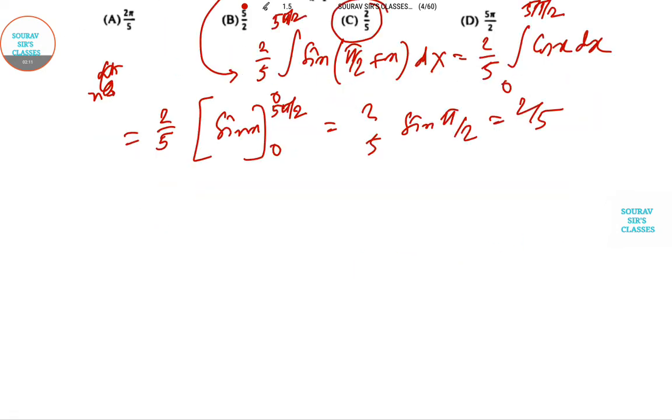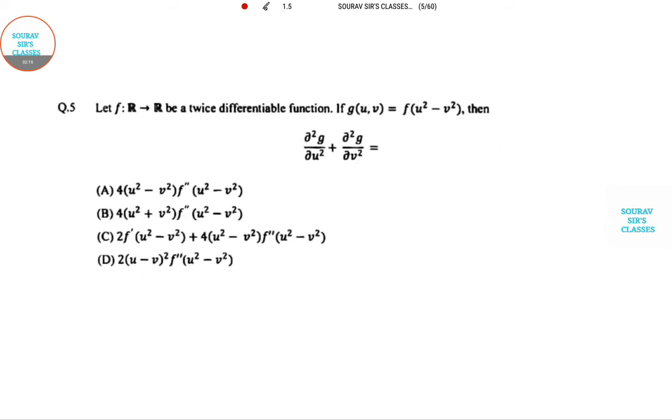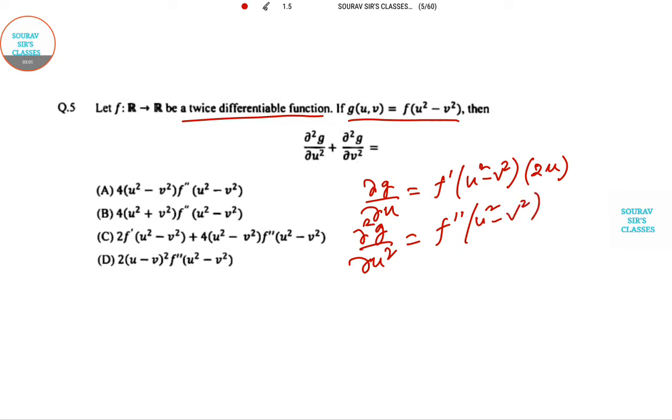Now we go to the next question. This one is a useful one. Let f: R to R be a twice differentiable function. If g(u,v) = f(u² - v²), then we have to find del² g del u² and del² g del v². We can see that g of u is a function of a function. So let me first do the partial derivative. This part is f dash (u² - v²) times 2u. And the second order derivative of this is giving us f double dash (u² - v²) times 4u² plus f dash (u² - v²).